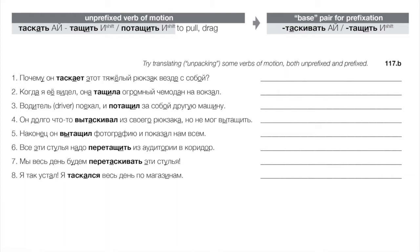More examples: «Он долго что-то вытаскивал из своего рюкзака, но не мог вытащить» — process vs. success: he was trying to pull something out for a long time but couldn't do it successfully. For prefixed motion verbs, we choose based purely on aspect — no determinacy question. «Наконец он вытащил фотографию и показал нам всем» — finally he successfully pulled out the photograph and showed it to all of us.